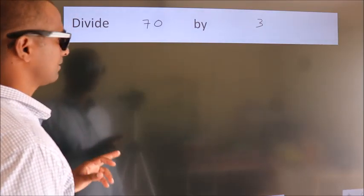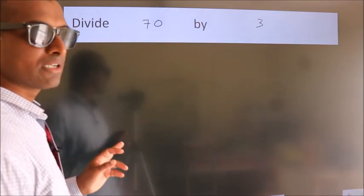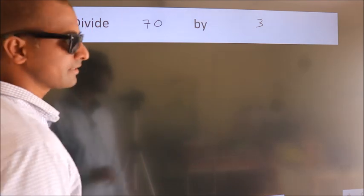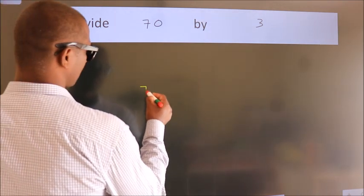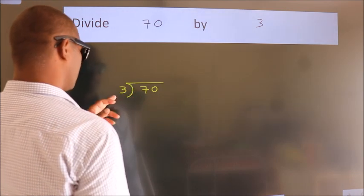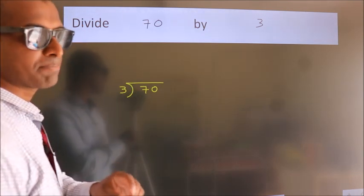Divide 70 by 3. To do this division, we should frame it in this way. 70 here, 3 here. This is your step 1.